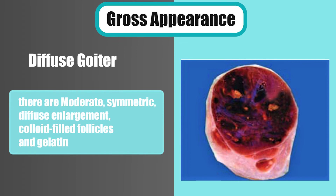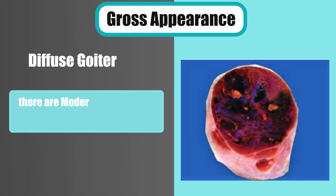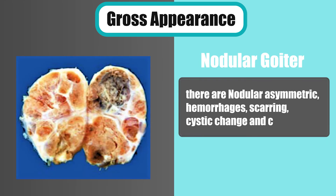Feature number five is gross appearance. In diffuse goiter, there is moderate, symmetric, diffuse enlargement with colloid-filled follicles and a gelatinous appearance. But in nodular goiter, there is nodular asymmetric enlargement with hemorrhages, scarring, cystic change, and calcification.